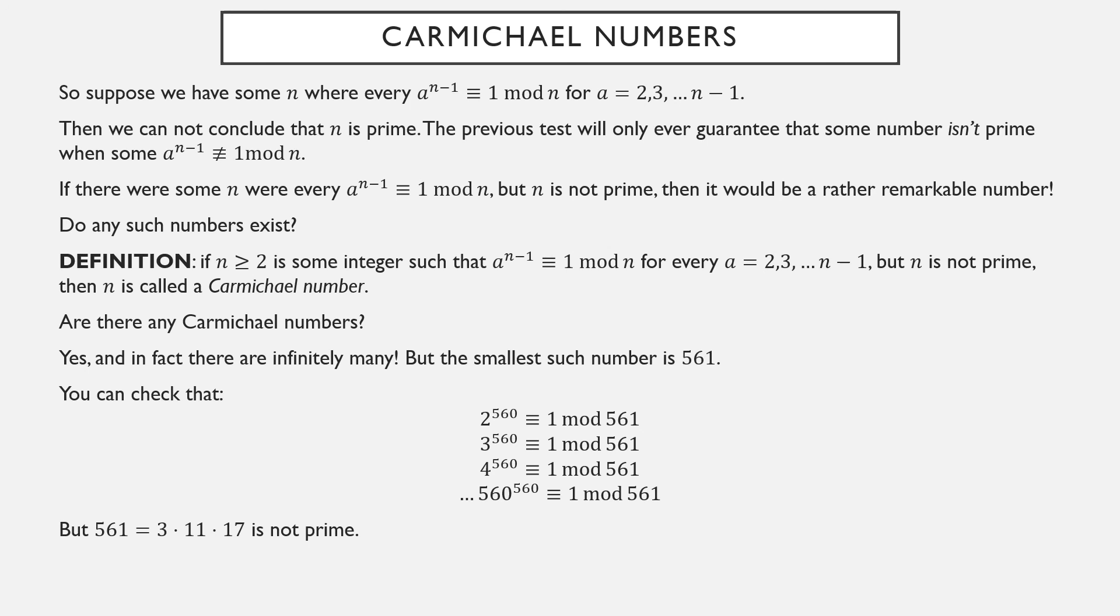So Carmichael numbers are kind of interesting. You should probably just take my word for it that 561 is a Carmichael number. Unless you're willing to write an algorithm to check all of these, it would be awfully tedious. But there are Carmichael numbers. In fact, there are infinitely many. We're not going to get into a characterization of them. For our purposes, this is just an interesting aside that it is possible for a to the n minus 1 to be equivalent to 1 mod n for all reasonable choices of a and still not be prime.